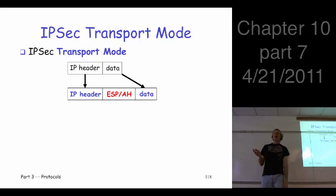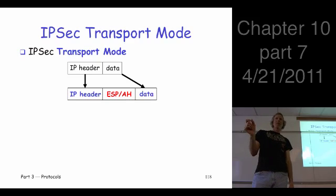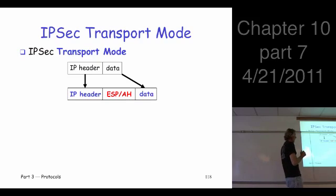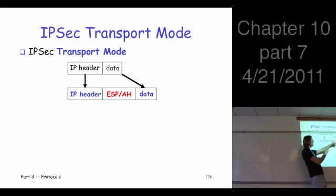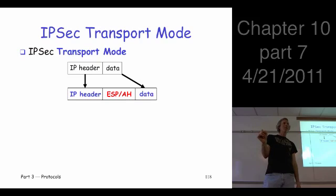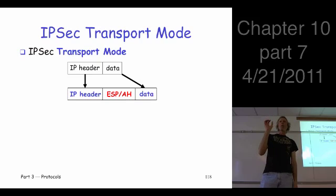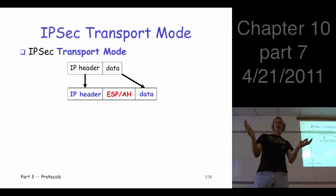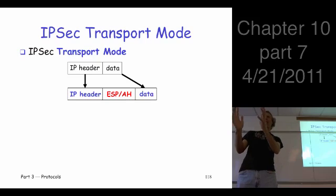The designers of IPSec thought about this and came up with a couple of options. The issue is that when we receive an IPSec packet, we have to treat it differently than an ordinary IP packet. We certainly have to do decryption and all that. So we first have to know it's an IPSec packet, and some parameters would apply to this particular packet. We need some additional header information to tell us something about this IPSec packet.